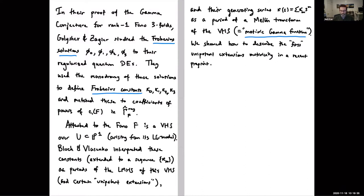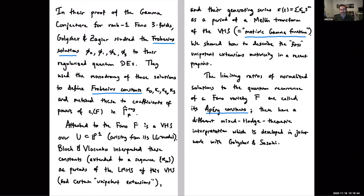Goloshev and Zagier proved something called the gamma conjecture for rank one Fano threefolds. The main tool they used was to study certain Frobenius solutions to the regularized quantum differential equations of these Fanos. They used the monodromy of these solutions to define Frobenius constants kappa_0 through kappa_3, and matched these to coefficients of powers of the first Chern class in the regularized gamma-hat class of the Fano.